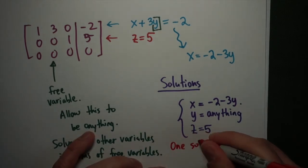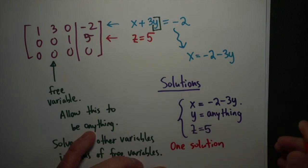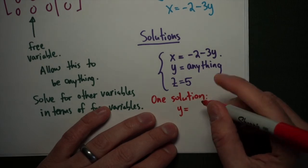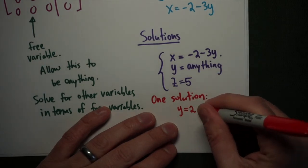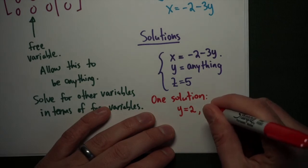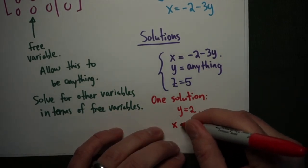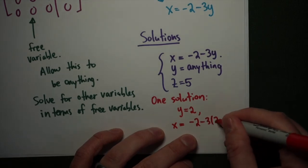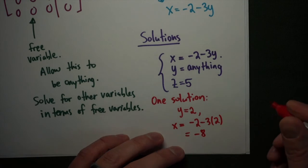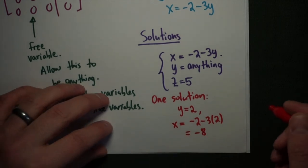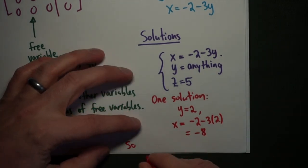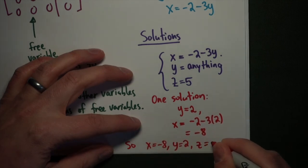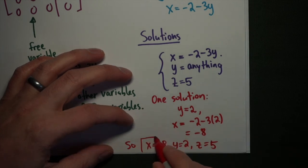For example, if I want one solution, I could choose y equals 2, because y could really be anything. In this case, my x is going to be negative 2 minus 3 times 2, so negative 2 minus 6, which is negative 8. So the one solution that corresponds to y equals 2 is x equals negative 8, y equals 2, and z equals 5. Any choice of y leads to one solution.